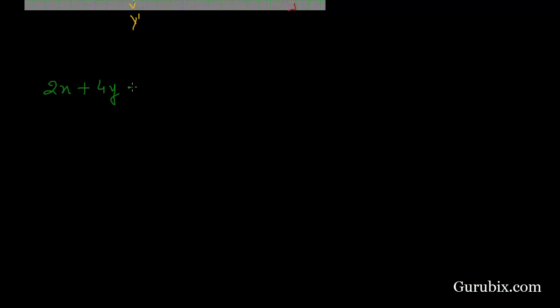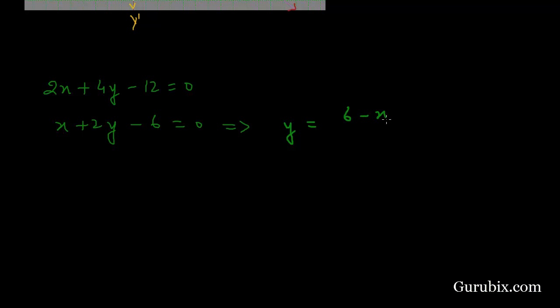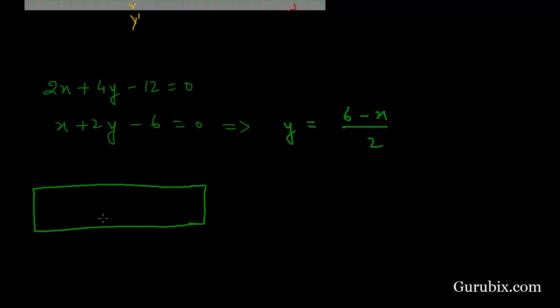Now we shall do the same thing for equation number 2, which is 2x plus 4y minus 12 equals to 0. We can divide this equation by 2 to get x plus 2y minus 6 equals to 0. Further solving gives y equals to 6 minus x over 2. Now we shall draw a table of solutions for this equation.